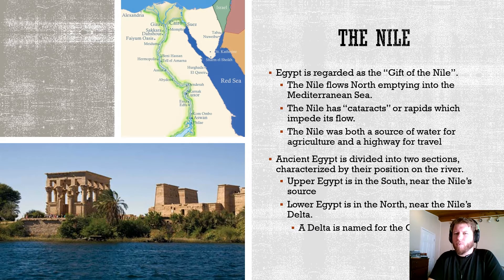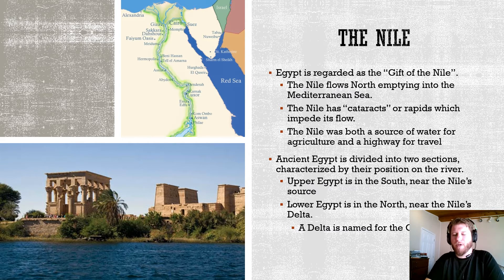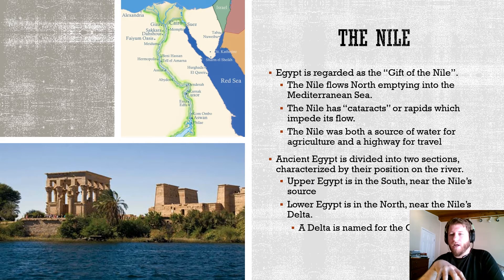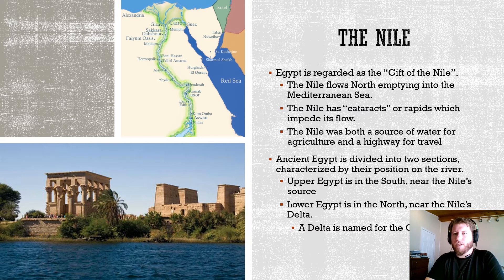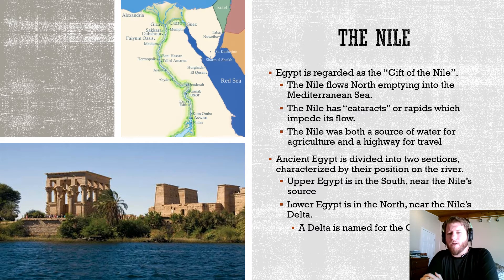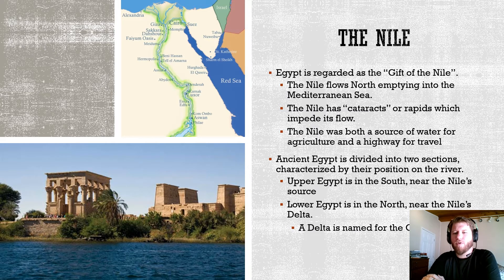The Nile flows kind of backwards from what you might think — it actually flows from south to north. Geographically, the southern part of Egypt is very mountainous; you have the Ethiopian Plateau and highlands where the Nile originates, and then it flows downhill into the Nile River Delta and out into the Mediterranean Sea. Along the way there are small rapids known as cataracts, which made life a little difficult for ancient Egyptians, who sometimes had to move to shore to navigate around them. By and large, the Nile was both the agricultural source and the travel highway for ancient Egyptians.